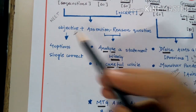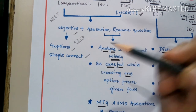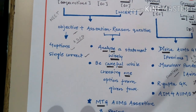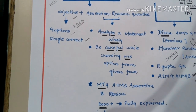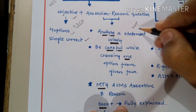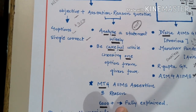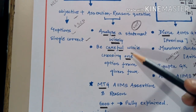The paper pattern includes objective type questions with four options A, B, C, D where a single option is correct — a very simple pattern. However, some questions are assertion and reason type, which can be a little tricky. To solve these, first read the given statements carefully and take your time. Then analyze the statements wisely, emphasizing key words like 'not' and other critical terms to understand what is being asked.